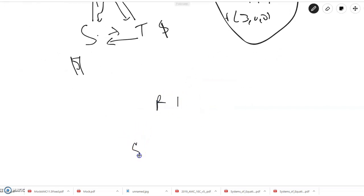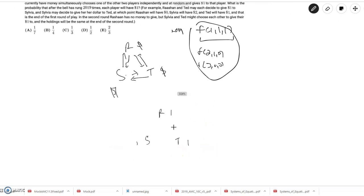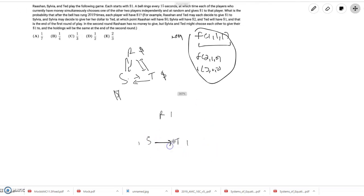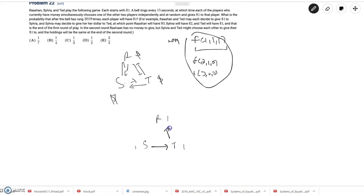If it's 1, 1, 1, if S gives her one dollar to T, and then T gives his one dollar to R, and then R gives his one dollar to S, then that's one way to do this. And basically, you go from 1, 1, 1, to 1, 1, 1.